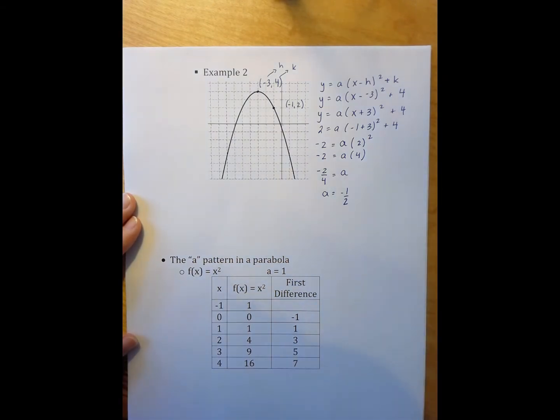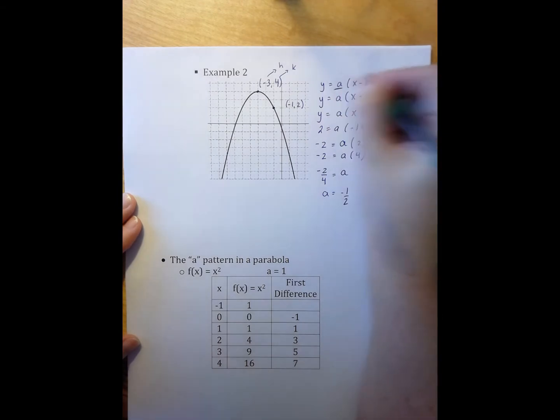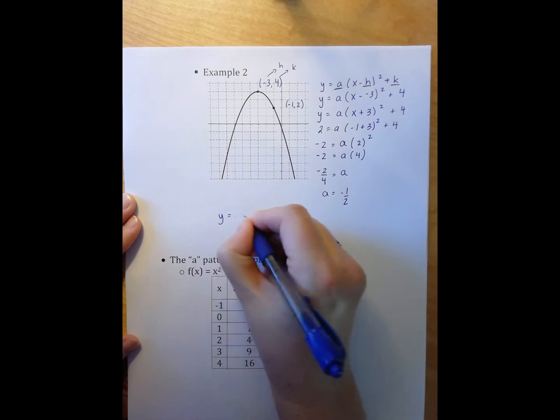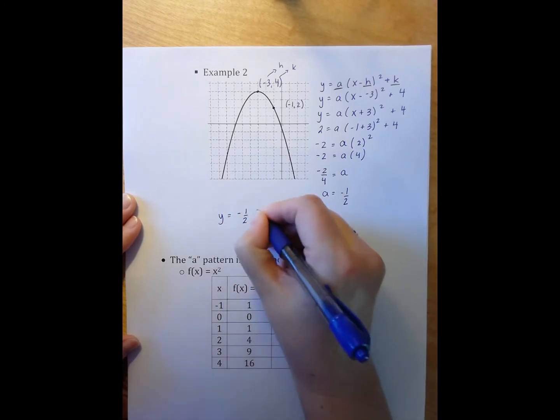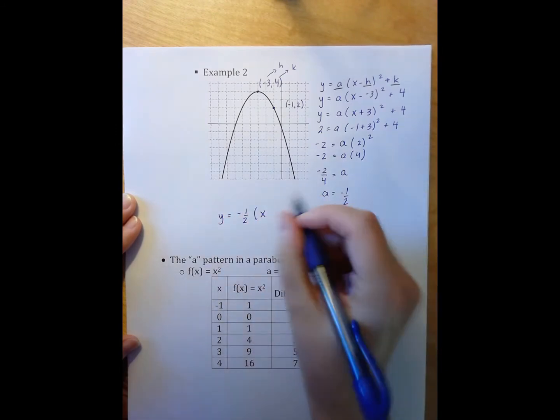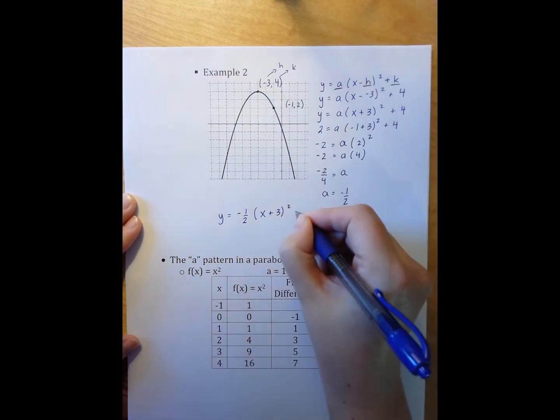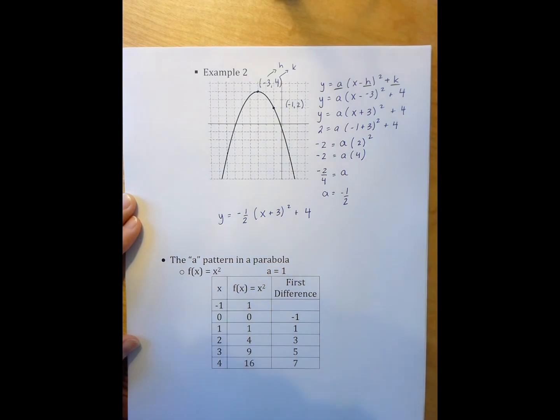So, I now have all the information I need to plug in an a value, an h value, and a k value. So, the equation is y equals negative 1 half times x minus negative 3, so there's my plus 3 quantity squared plus 4. And there's the equation of this particular parabola.